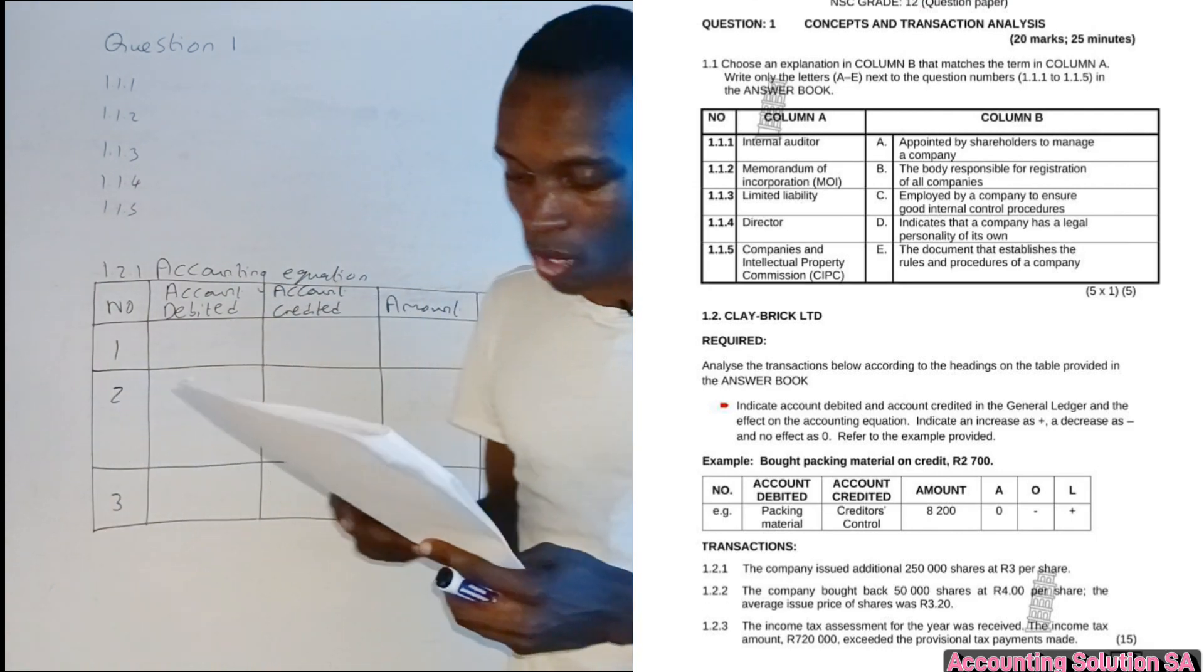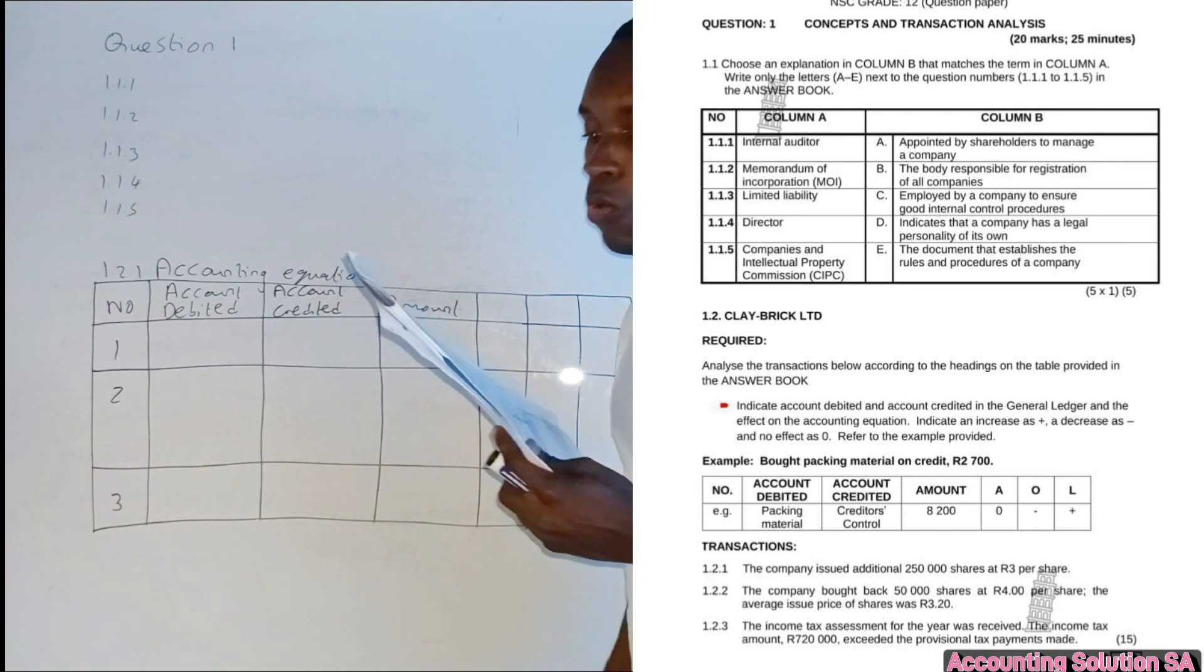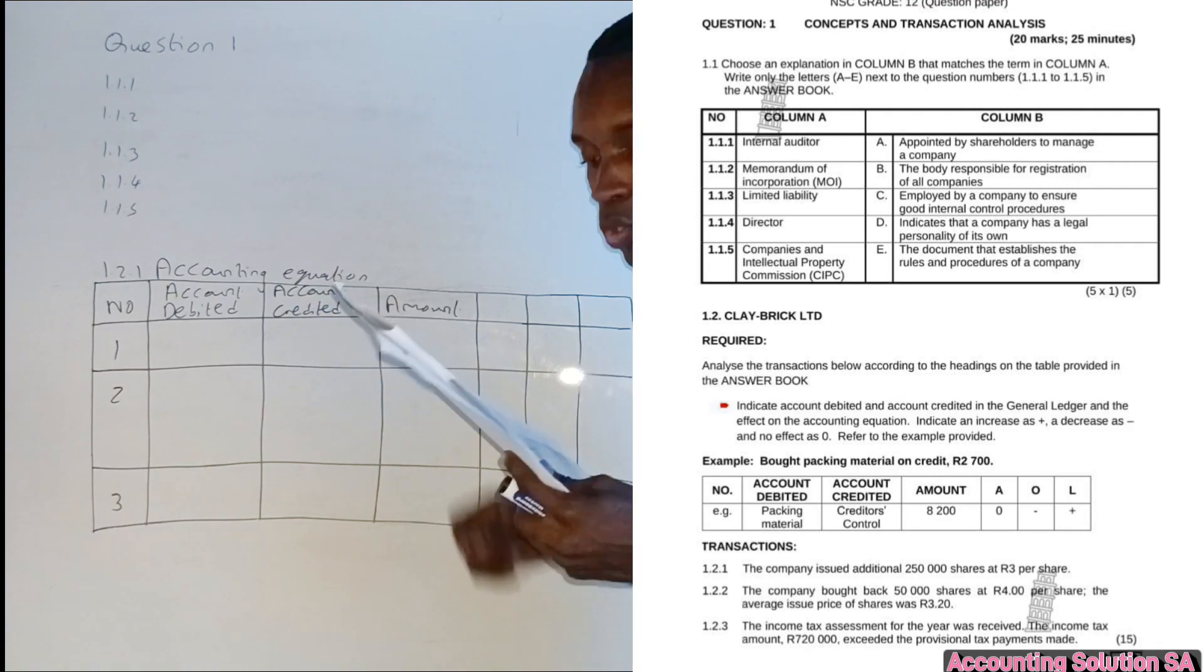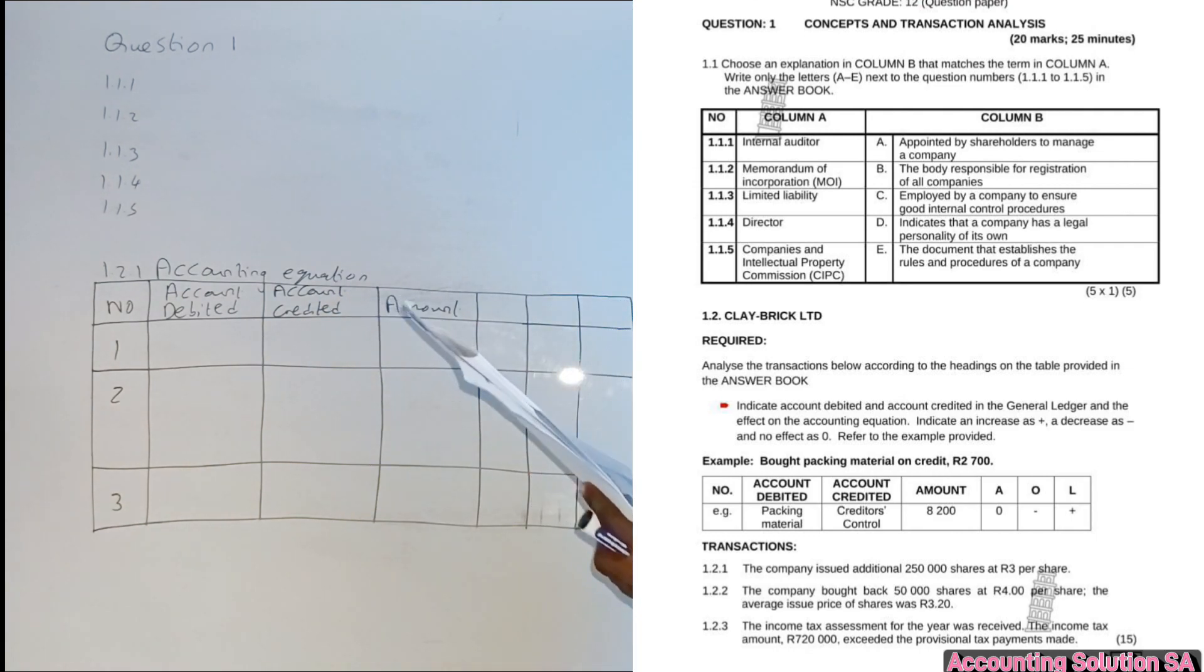But before we go to accounting equation, we have column A and column B that we're just going to go through quickly. Number 1.1, internal auditor. If you check, internal auditor is going to match with number C. The reason is because when we talk about internal auditor, this is the person employed by the company to ensure good internal control procedures. So number C is going to be the correct answer.